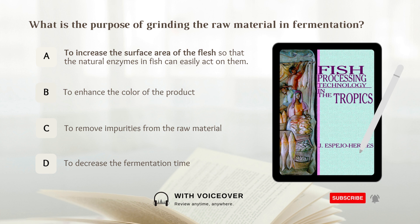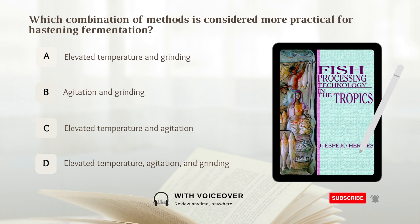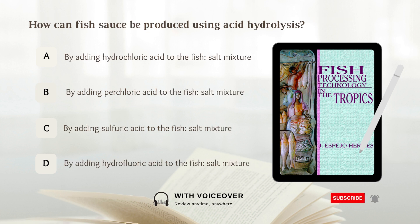Which combination of methods is considered more practical for hastening fermentation? A. Elevated temperature and grinding. B. Agitation and grinding. C. Elevated temperature and agitation. D. Elevated temperature, agitation, and grinding. Answer: D. Elevated temperature, agitation, and grinding.